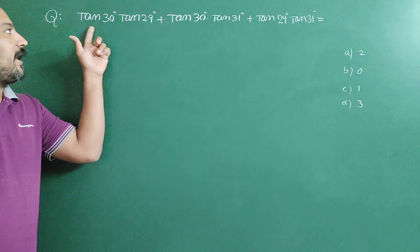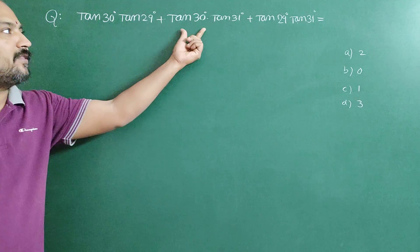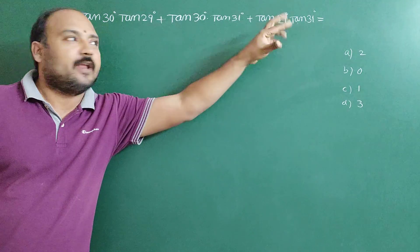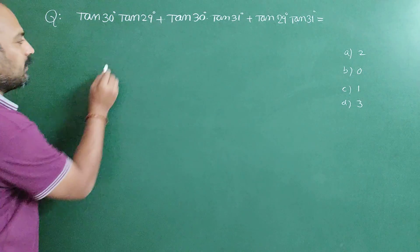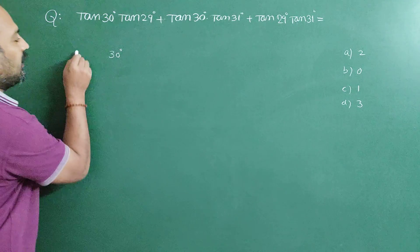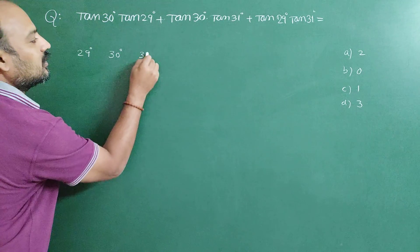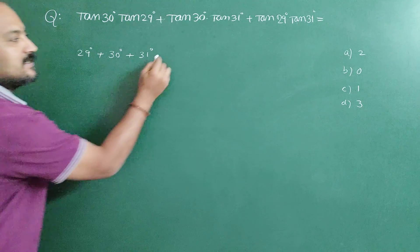See this question, dear students: tan 30 times tan 29 plus tan 30 times tan 31 plus tan 29 times tan 31. In this question, a small shortcut is hidden. Observe that 30, 29, and 31—the sum of these angles is equal to 90.